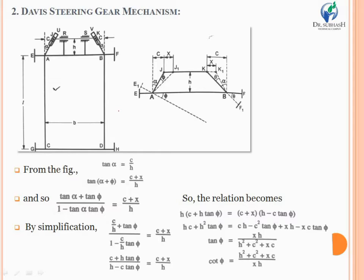For the mathematical analysis of the Davis mechanism, small l stands for the wheelbase, b is the distance between the pivots of the front axle, and small h is the height of the link JK from the front axle. When the vehicle moves on a straight path, both links AJ and BK are inclined at an angle alpha from the vertical direction.